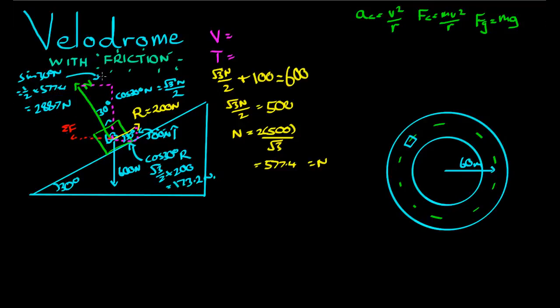So we've got 288.7 newtons acting in that direction, and 173.2 newtons acting in that direction. So the net force horizontally is equal to 288.7 take away 173.2, which is equal to around about 115 newtons. That is the amount of force that we have drawing this cyclist to the centre of the circle. And now we just have to apply that to this formula up here. The centripetal force is equal to mv squared on r.